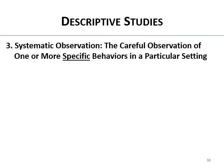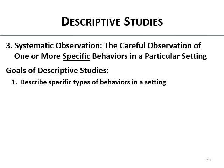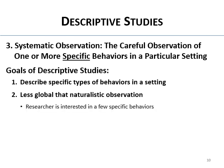The third type of descriptive study is systematic observation — carefully observing one or more specific behaviors in a particular setting. The goals are to describe specific types of behaviors in a setting. These tend to be less global than naturalistic observations, more focused on specific behaviors rather than trying to record everything going on.